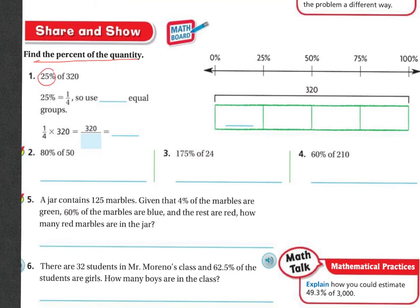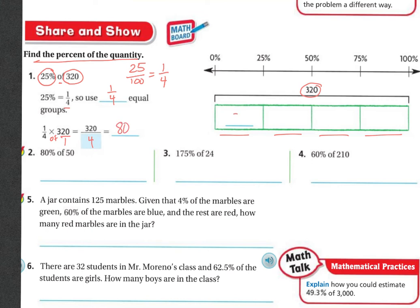Next, we're going to find the percentage of a quantity: 25% of 320. 25% is the same as 25 over 100, which reduces to one quarter. So 25% equals 1/4. We have 320 and we break it into four groups because we want to know what one quarter is. So 1/4 of 320 — 'of' means times — is 1 times 320 over 4 times 1. 4 goes into 320 eighty times equally, so each group is worth 80. Since we only want 25%, the answer is 80.